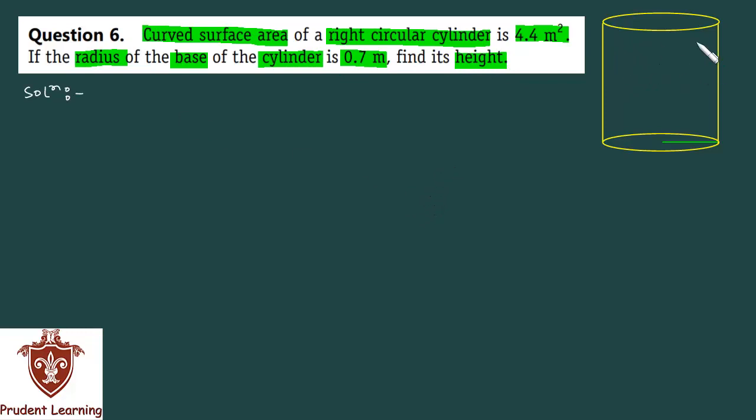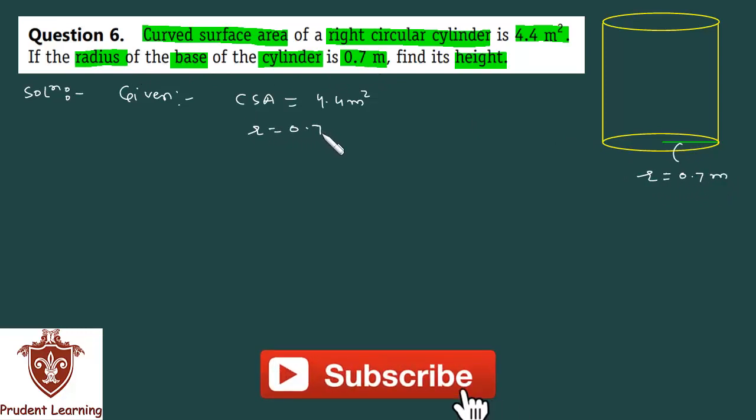You have a right circular cylinder with curved surface area given. We are given that the curved surface area is 4.4 meter square and the radius is 0.7 meter. Find what? Height.